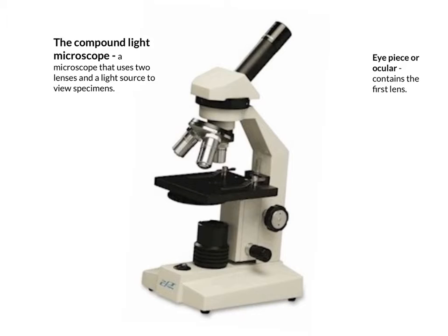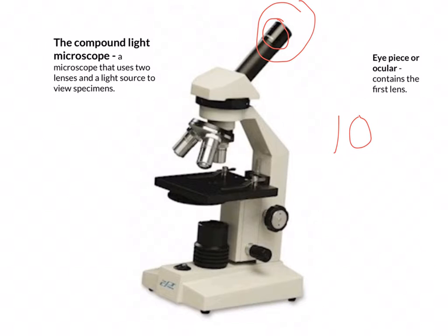First, what is the compound light microscope? A compound light microscope is a microscope that contains two lenses in order to increase magnification, and also a light source to better view the specimen. The first lens is in the eyepiece, also called the ocular. You will notice that on the eyepiece there is a white section — that is the magnification of the eyepiece.